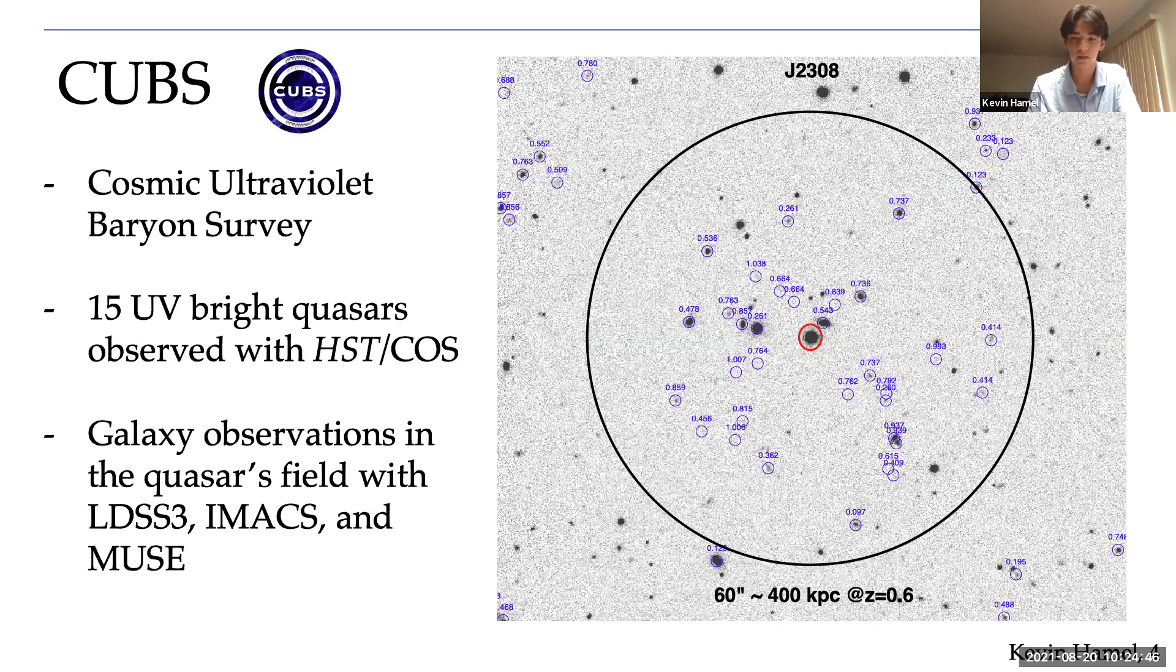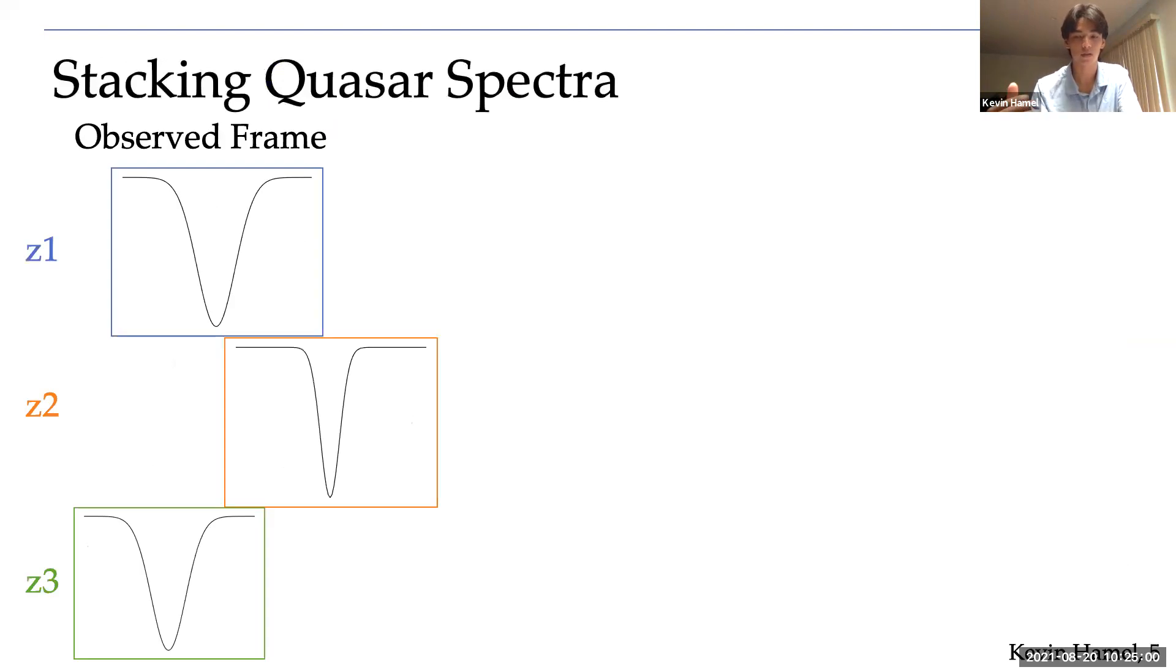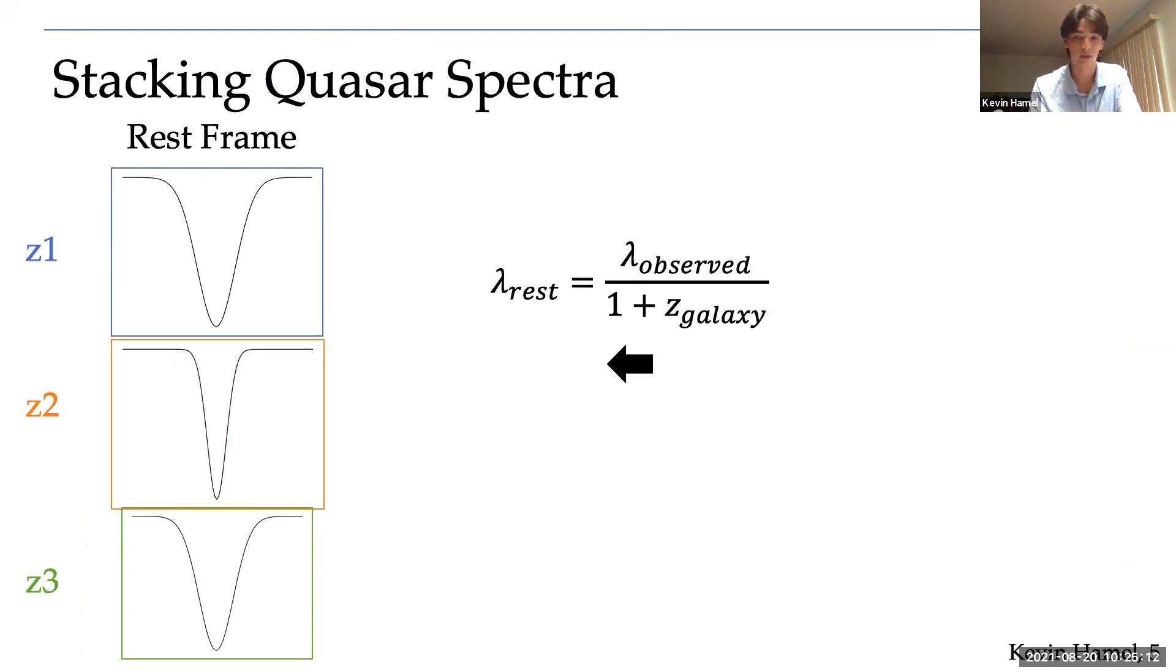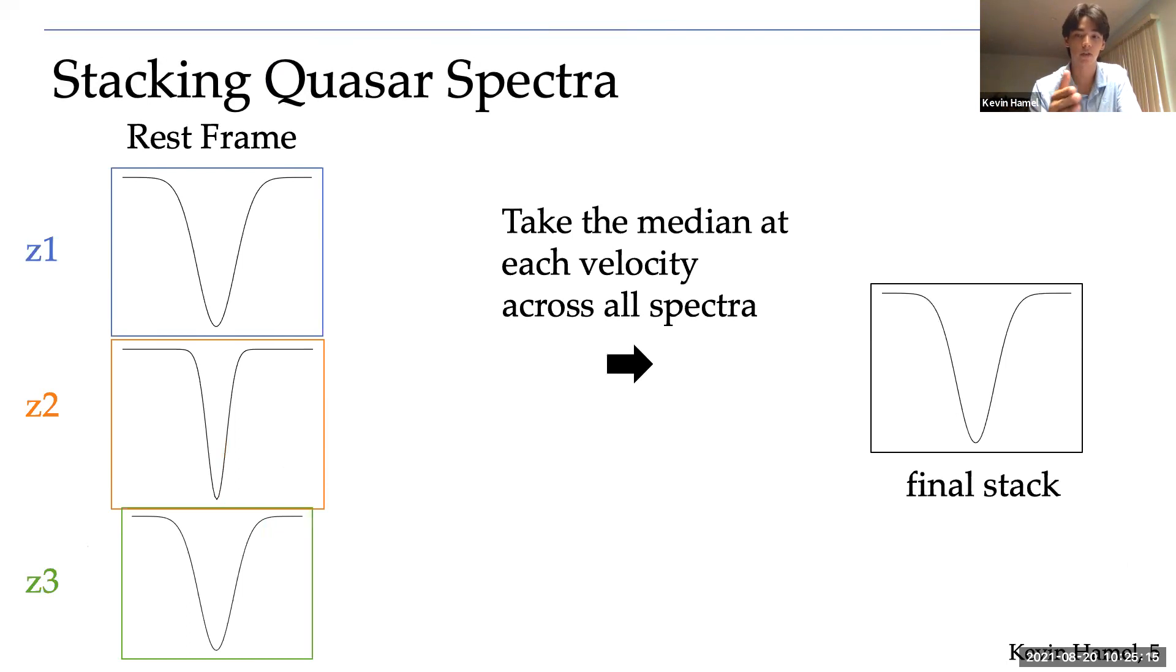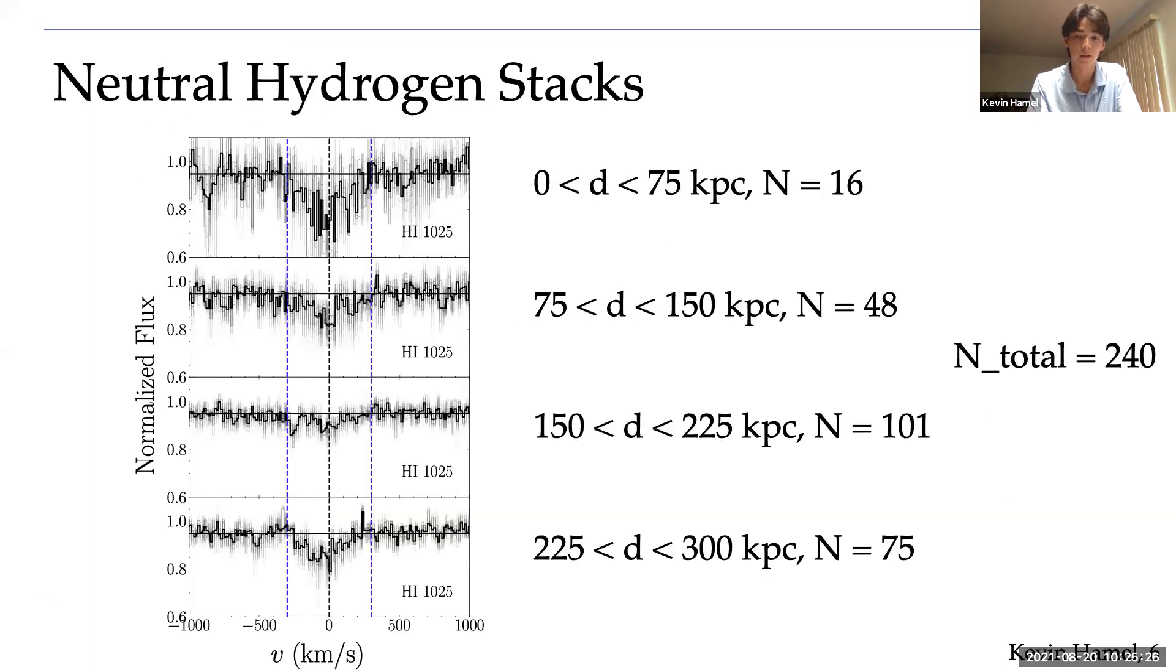By looking at individual galaxies, you can get an idea of the diversity in gaseous environments. But we were interested in determining a typical amount of absorption, which can be done with a method called stacking. To illustrate this, take, for example, the same transition, say Lyman beta in a quasar spectrum observed for three different galaxies at different redshifts. Using the following equation, I can put them in their rest frame. Then I can take the median at each velocity across all spectra to end up with one final stack. Going forward, I group galaxies to form stacks based on distances, but also based on their properties.